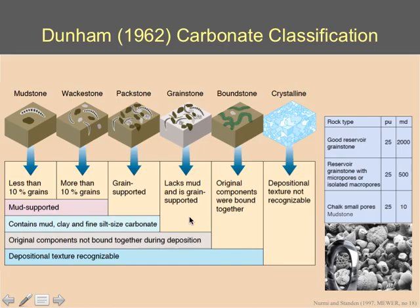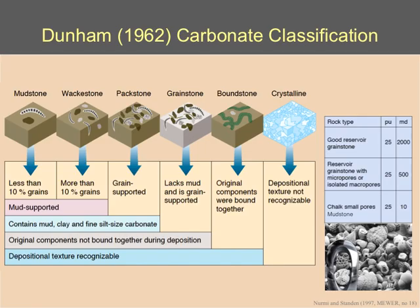One thing associated with geology is classification of carbonates. Dunham's classification scheme is pretty much universally used. It has strange terms like mudstone, wackestone, packstone, etc. The best reservoir case is grainstone, which lacks mud and is a grain-supported rock. The original components are not bound together during deposition — they are loose separated grains and the depositional texture is still recognizable. A grainstone can have up to 25 percent or more porosity and up to 2,000 millidarcies — very high permeability.